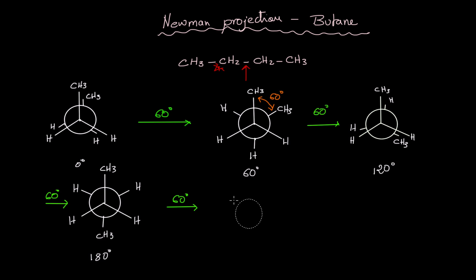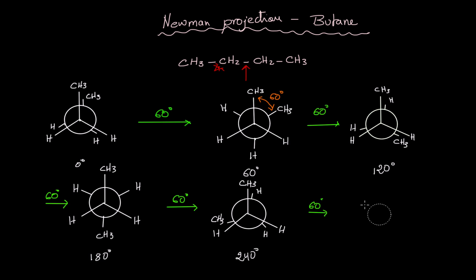Another 60 degrees takes us back to an eclipsed conformation again. The CH3 on the front carbon doesn't change position; we have the two hydrogens on the front, two hydrogens on the back, and the CH3 is now on the back carbon at a new position. This is the 240 degree conformation. One more 60 degrees brings us to another staggered conformation: CH3 on front, H and H, and CH3 on back with H and H — this is the 300 degree conformation.